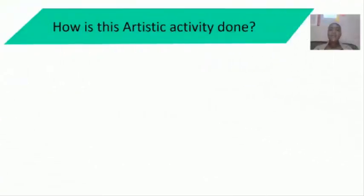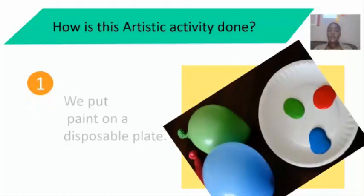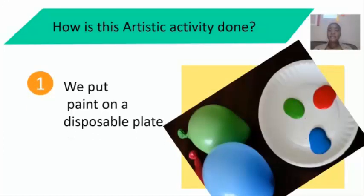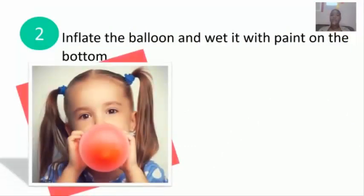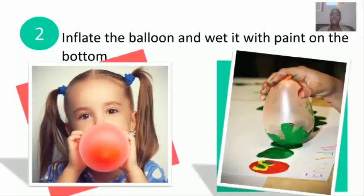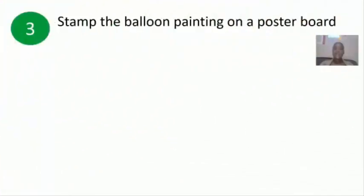How is this activity done? Number 1, place the paint on a disposable plate. Number 2, inflate the balloon and wet it with paint on the bottom. Number 3, tap the balloon painting on a poster board. See boys and girls, how easy!